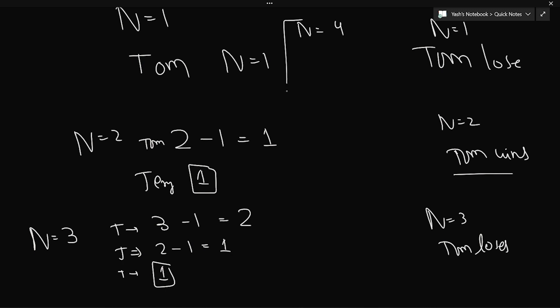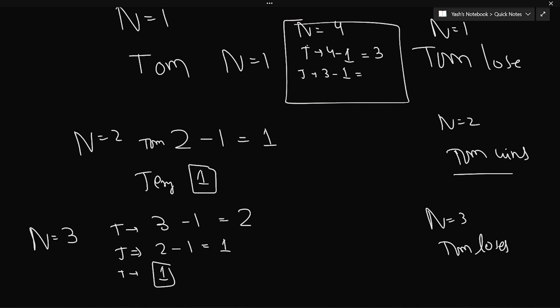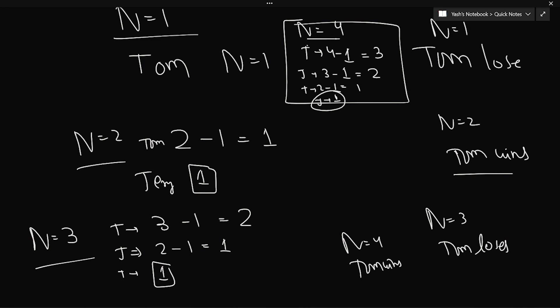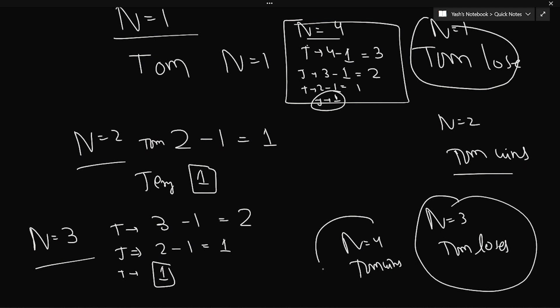Trying several values from n=1 to n=4 optimally, we observe a pattern: when n is odd, Tom loses; when n is even, Tom wins. Can we derive this observation mathematically? Yes — let's think about what Tom is always trying to do.